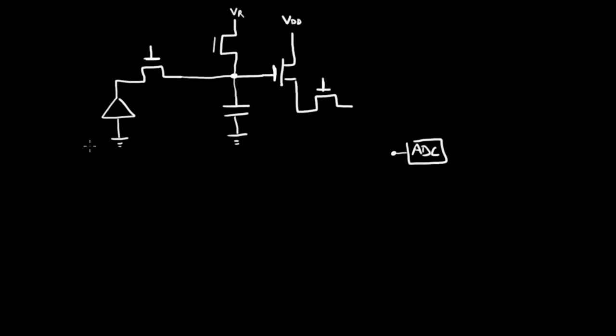And what I've drawn here is a 4T pixel, 4T pixel, 4 transistor pixel. And this was the simplest possible pixel that will allow for in-pixel correlated double sampling.